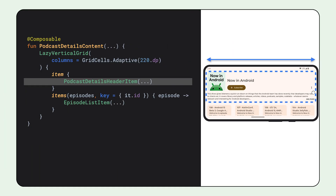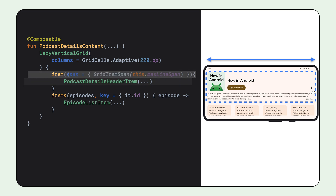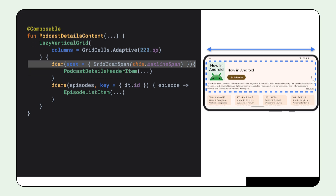To make the header of the screen scrollable, we add it as a separate item to the grid. But we also wanted it to span the entire width, instead of placing it in one of the four columns. To do so, we can use the span property from the lazy grid scope, which allows us to expand just this one item at full width.